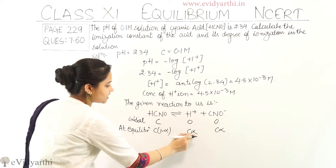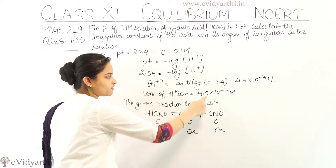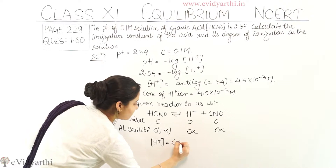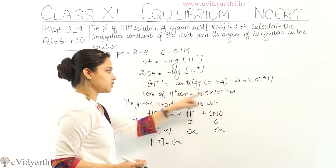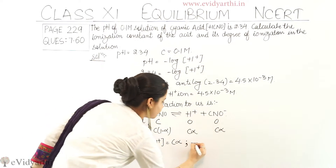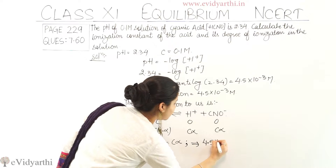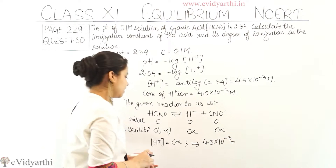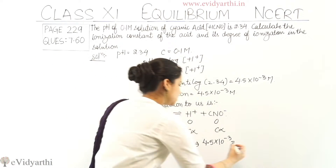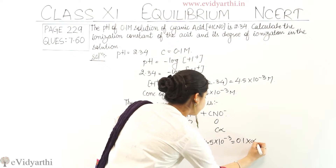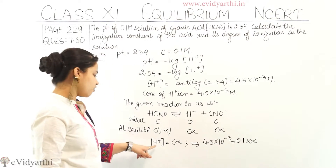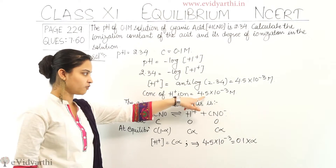The hydrogen ion concentration is Cα. We have already calculated the concentration of hydrogen ion, which is 4.5×10⁻³. So Cα = 4.5×10⁻³. The value of C is 0.1, so 0.1×α = 4.5×10⁻³. The concentration was given to us as 0.1 molar.